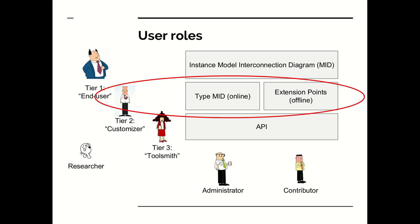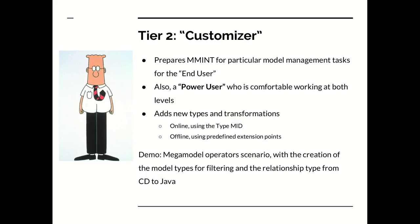We now return to the perspective of the user roles and will be focusing on the tier 2 user, which we will also be calling the customizer. A tier 2 user is able to do everything the tier 1 user does, but also extend Mint in some particular ways. The customizer's role is to prepare Mint for particular model management tasks that the end user can then employ. A tier 2 user can also be seen as a power user who is comfortable working at both the instance model level and the type level. The customizer can change Mint by adding new types and transformations, either online via the type model interconnection diagram, or offline using the predefined extension point mechanism provided by Mint through Eclipse's extension point system.